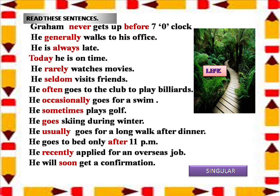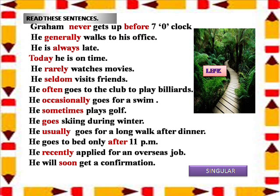This will help us to make situational conversations if we concentrate on one aspect of making sentences. Now let us read these sentences. These sentences are about Graham, so they are in the singular. Graham never gets up before seven o'clock. He generally walks to his office. He is always late. Today he is on time. He rarely watches movies. He seldom visits friends.